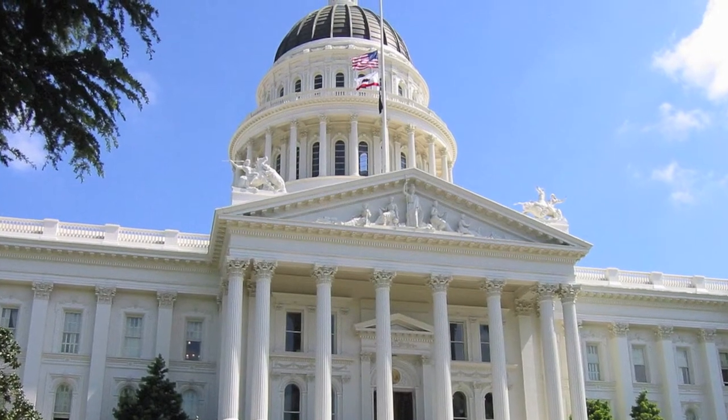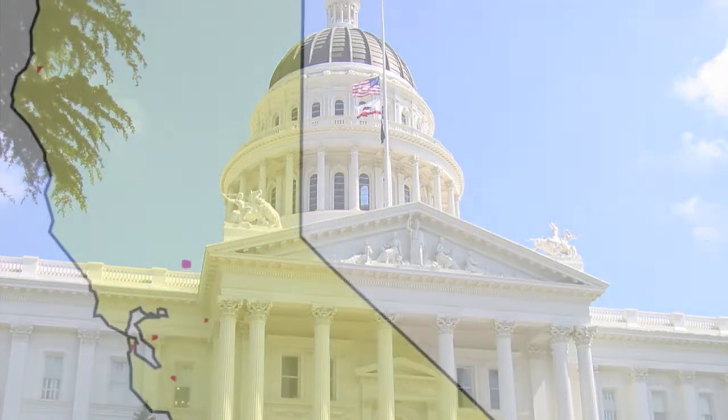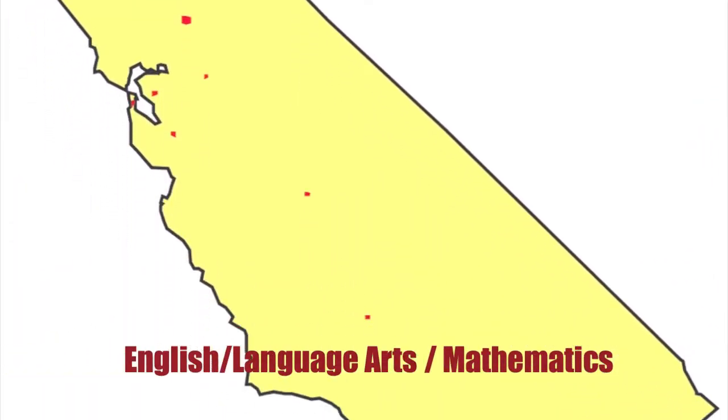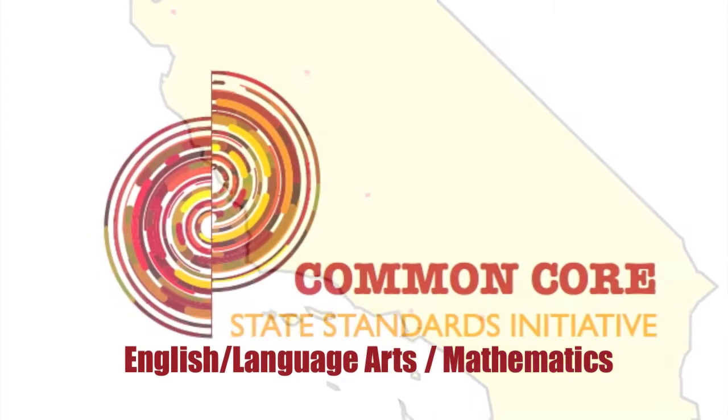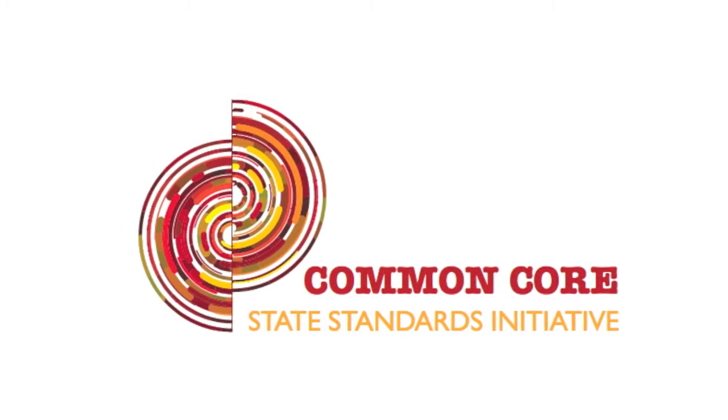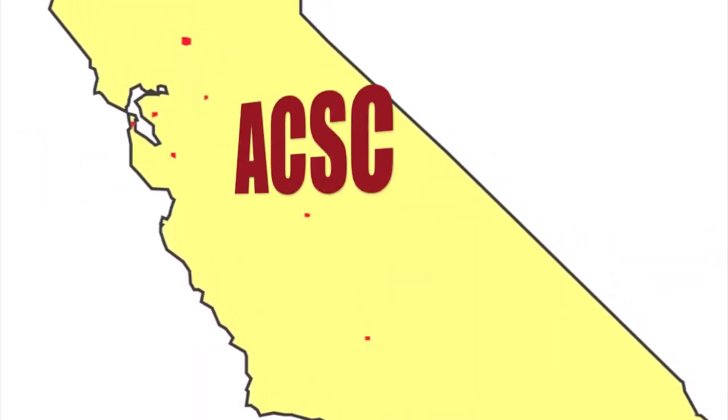In January 2010, our Governor signed into law Senate Bill X-5-1, calling for California's academic content standards in English language arts and mathematics to be examined against the Common Core State Standards. The bill also called for the establishment of the California Academic Content Standards Commission, or ACSC.